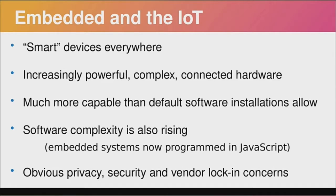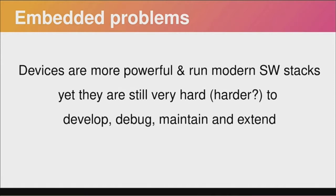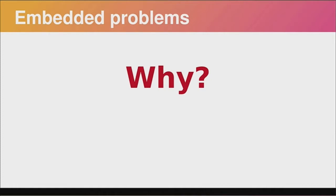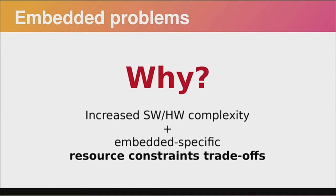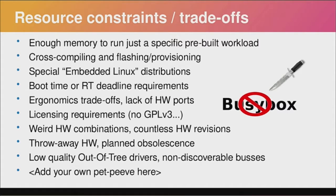This complexity, both software and hardware, brings with it obvious security concerns. Even though our devices are much more powerful and capable, they are still very hard to develop — or even harder due to the added complexity. I don't know any embedded developer today who can say developing an IoT-connected smart embedded system is easy. It's very hard because we have increased complexity coupled with resource constraints. We try to make embedded devices as cheap as possible, fitting Linux distributions and network stacks in very low memory. There are lots of trade-offs made in the embedded space.